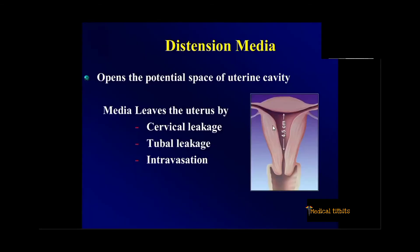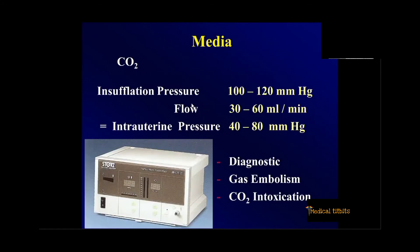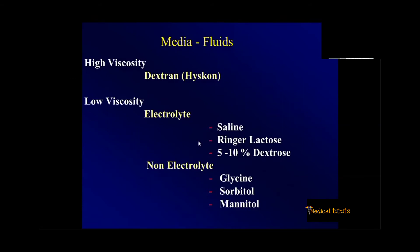The potential uterine cavity, when we distend it using the distension media, can leak through the cervix, through the tubes, or get absorbed. Initially people were using carbon dioxide — a specific hysteroscopic carbon dioxide, not routine laparoscopic CO2. But carbon dioxide can be used only for diagnostic purposes; there is always a risk of gas embolism and CO2 intoxication. Most commonly used is fluid, and the most widely used is low-viscosity saline, which is electrolyte-based, or non-electrolyte glycine when using monopolar energy.